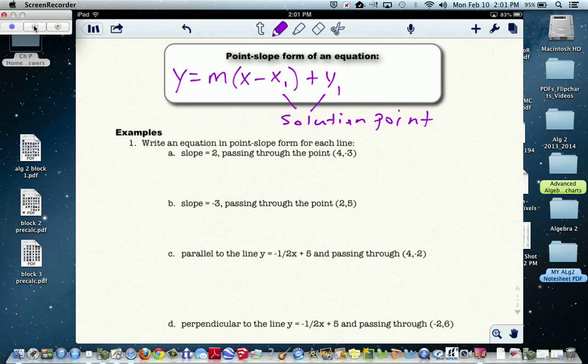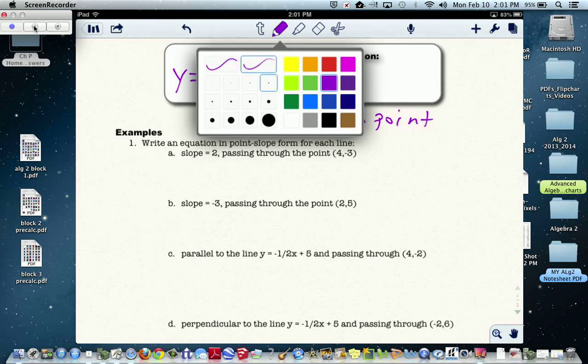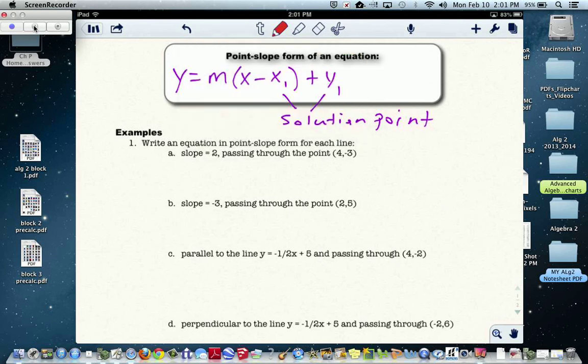If the slope is 2 and it passes through the point (4, -3), we're going to go y equals slope 2, x minus 4, minus 3. That's actually a good equation.